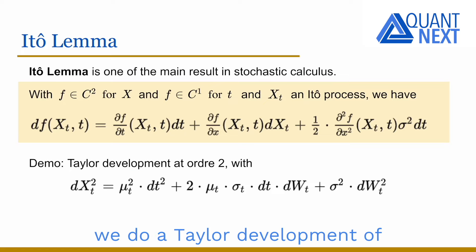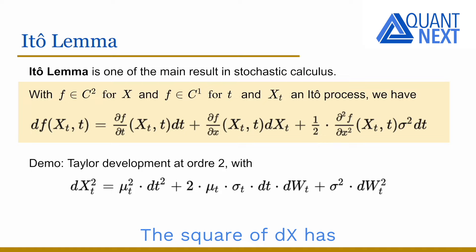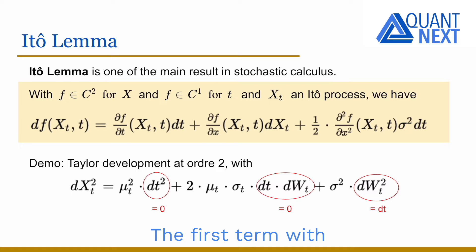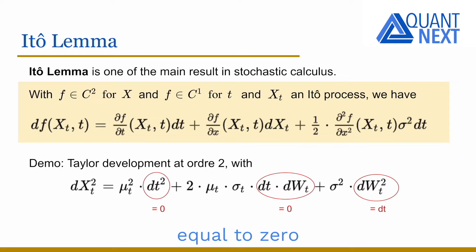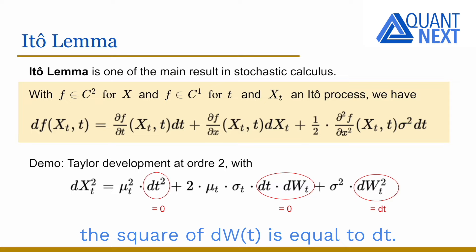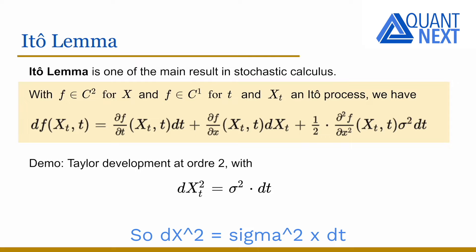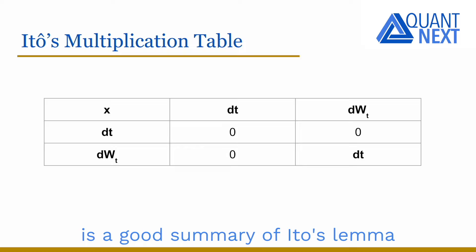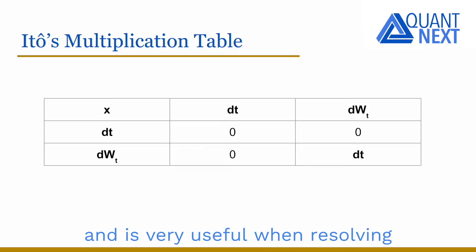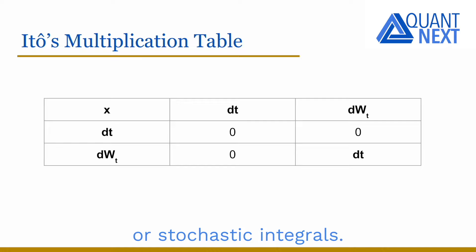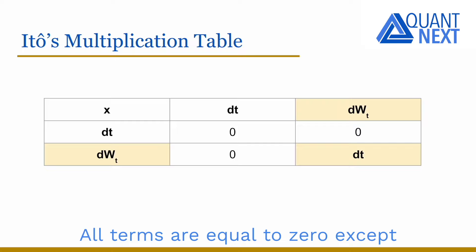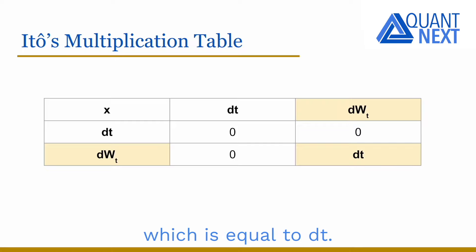To demonstrate it, we do a Taylor expansion of f at the second order. The square of dx has the following expression. The first term with the square of dt and the second one with dW_t times dt are equal to 0, while the third one — the square of dW_t — is equal to dt. So the square of dx equals the square of sigma times dt. The following multiplication table is a good summary of Ito's lemma and is very useful when resolving stochastic differential equations or stochastic integrals. All terms are equal to 0 except dW_t times dW_t, which is equal to dt.